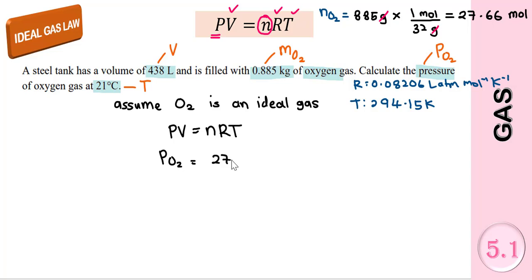We already have the number of moles, 27.66 moles, times the gas constant R 0.08206. The temperature in Kelvin, 294.15. We divide by the volume here, which must be in liters, 438 liters.